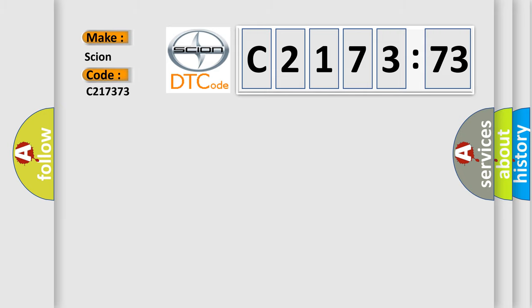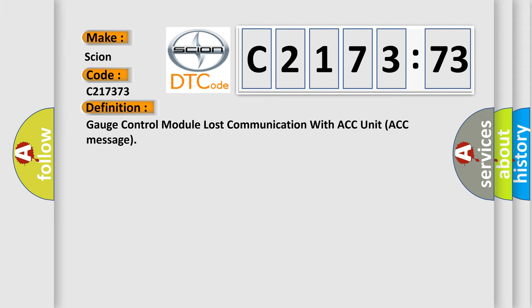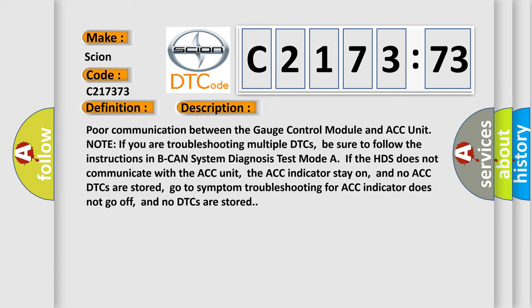So, what does the diagnostic trouble code C217373 interpret specifically for Scion car manufacturers? The basic definition is: Gauge control module lost communication with ACC unit ACC message.